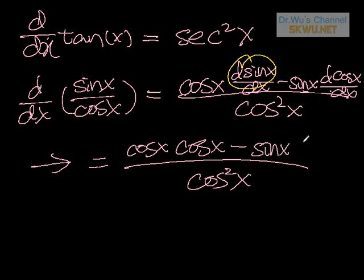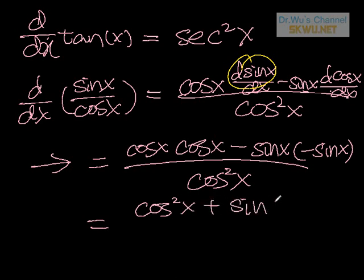Let's keep that sine x. That would be minus sine x times negative sine x, so that would be cosine squared x plus sine squared x over cosine squared x.